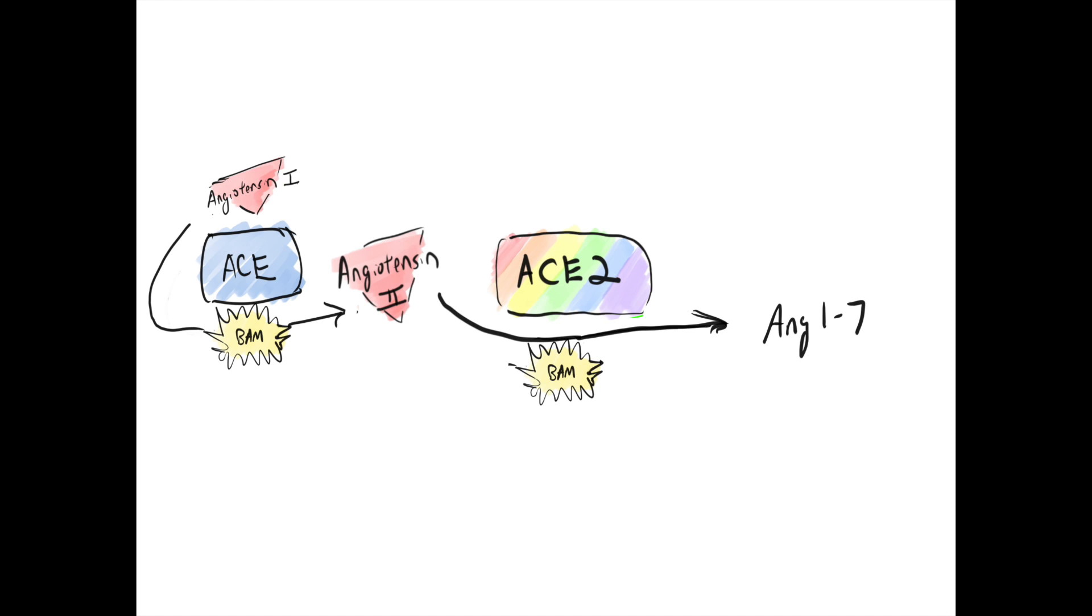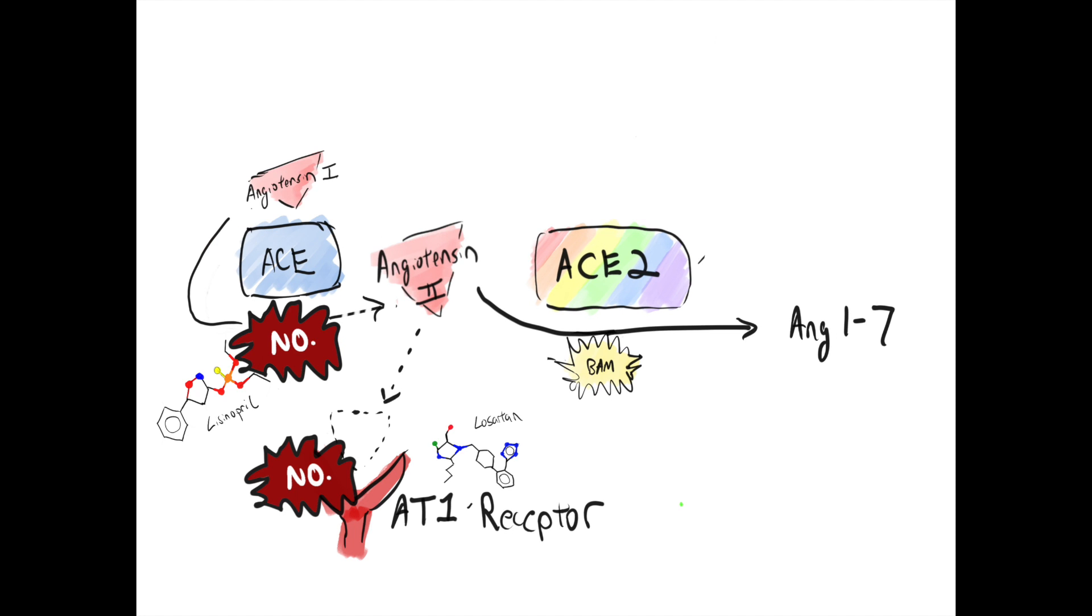So how do ACE inhibitors and ARBs affect this system? ACE inhibitors directly stop ACE from working, and ARBs block the action of angiotensin 2 at a more downstream location. The effect in either case is to lessen the power of the RAS cascade, leading to less vasoconstriction, less salt retention, and lower blood pressures.